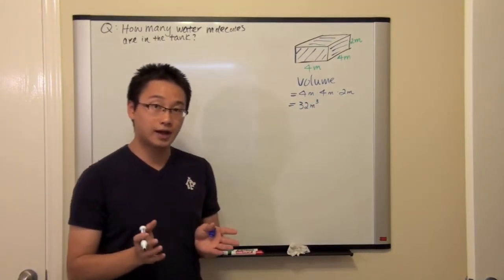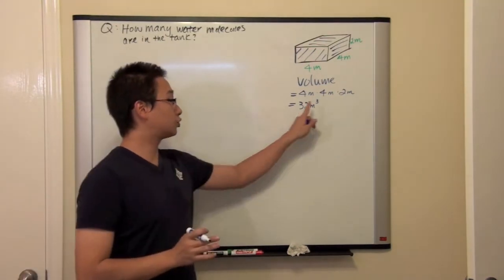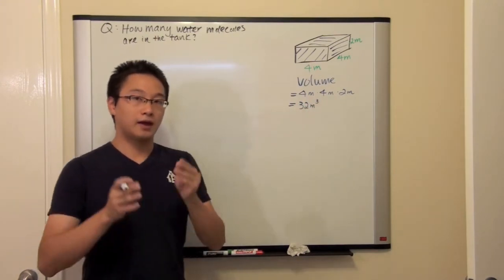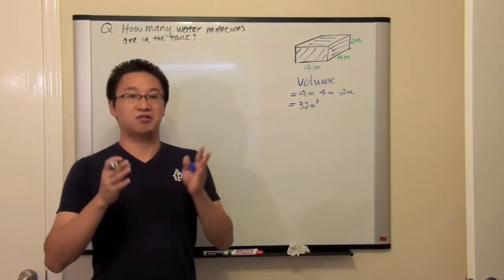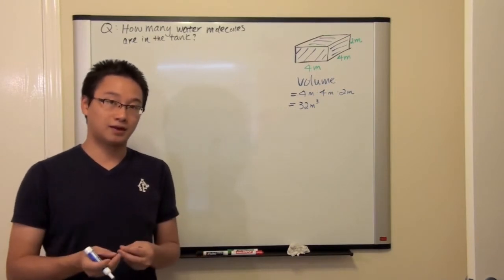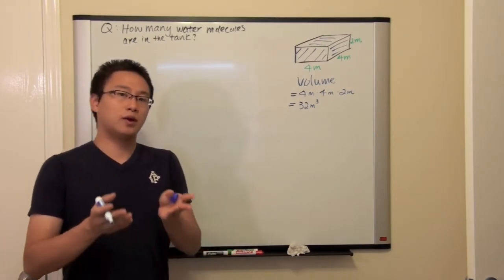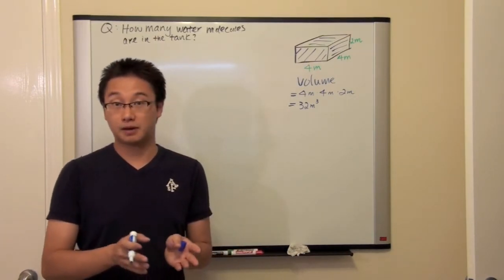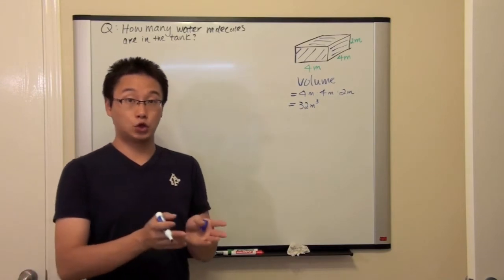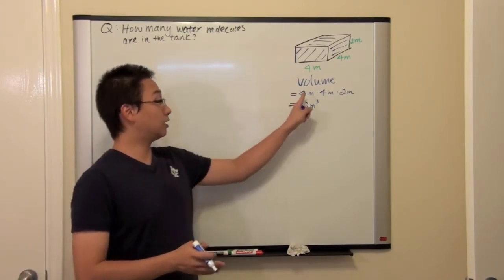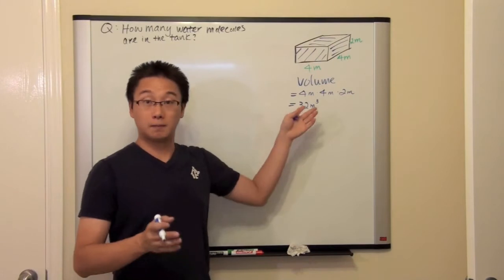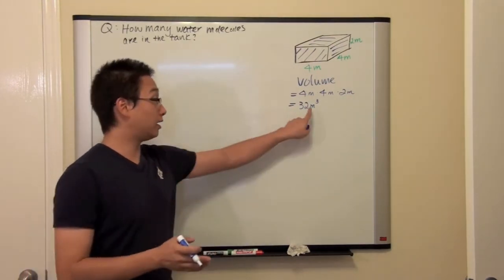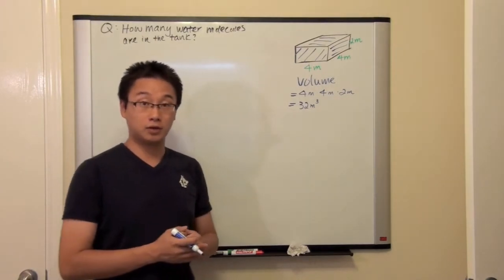Just in case you do not understand why it is meters cubed — think about the meter just like any variable you see in math class, like x. When you have x times x times x, x has multiplied itself three times, so you have x cubed. In this case, it is the same thing. We have like terms — meters — and it is multiplied by itself three times. So at the end, we should have cubic meters.